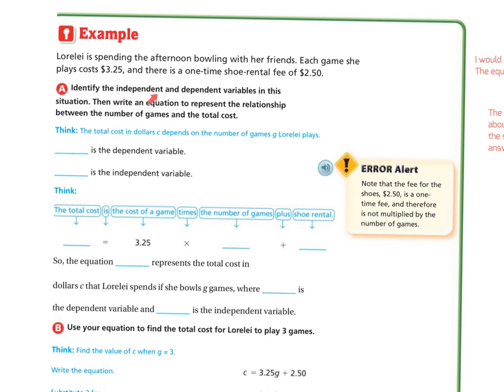Identify the independent and dependent variable in this situation. Then write an equation to represent the relationship between the number of games and the total cost.